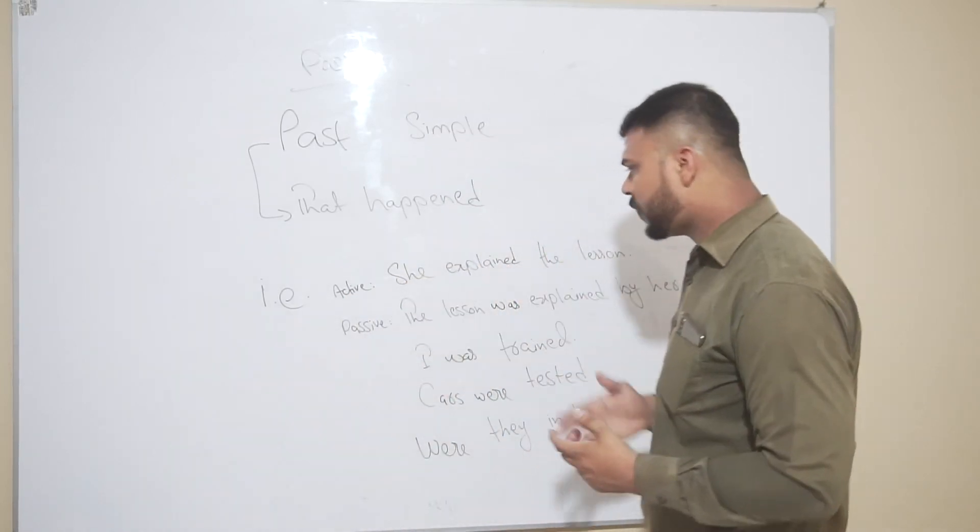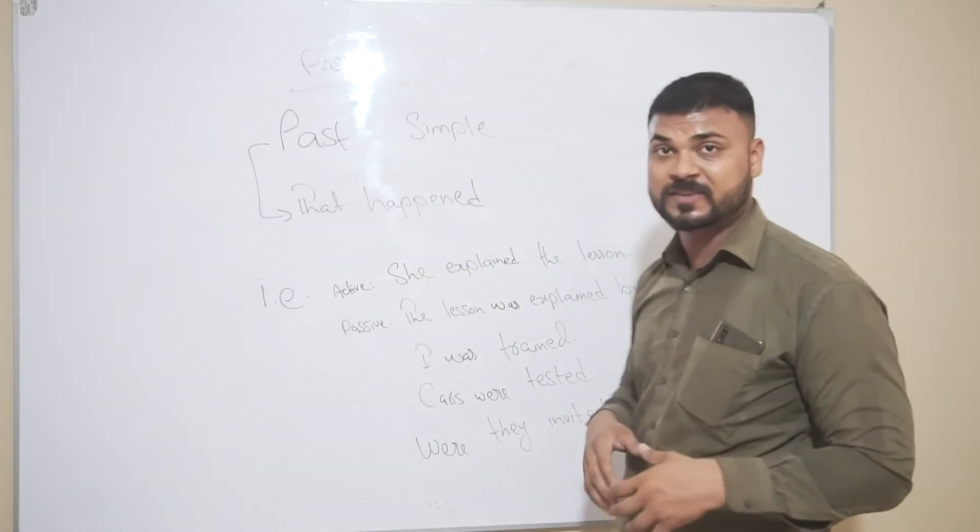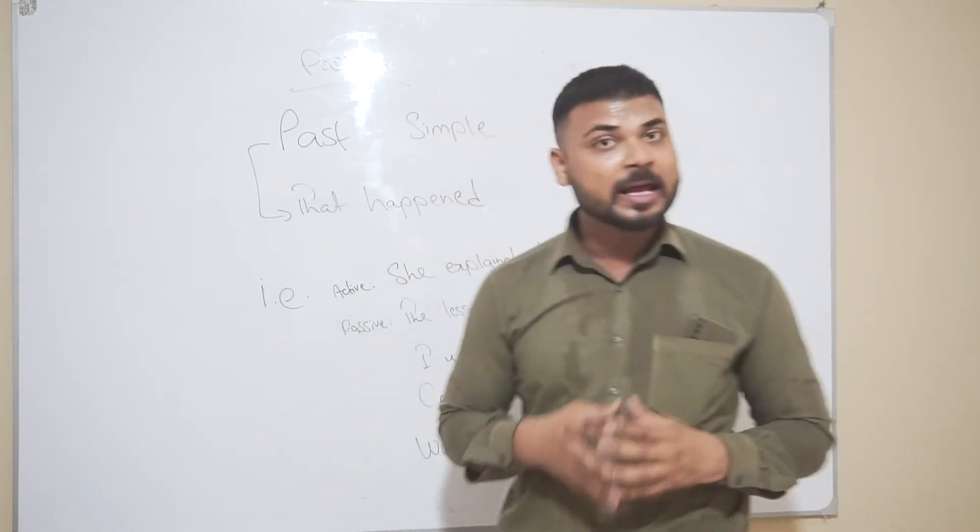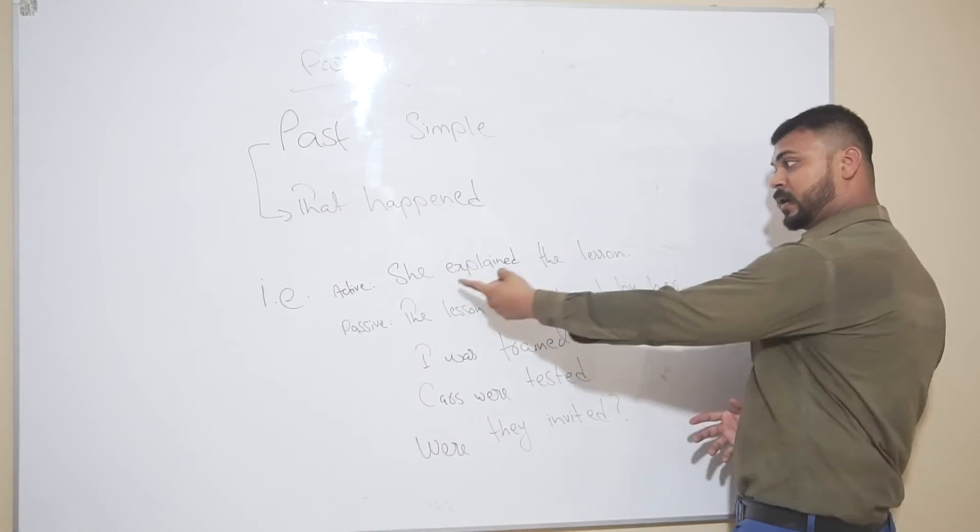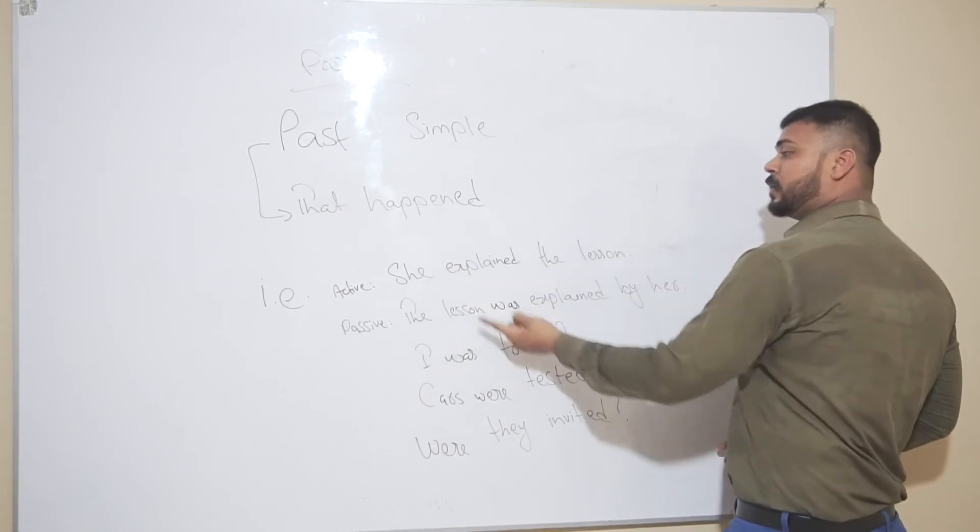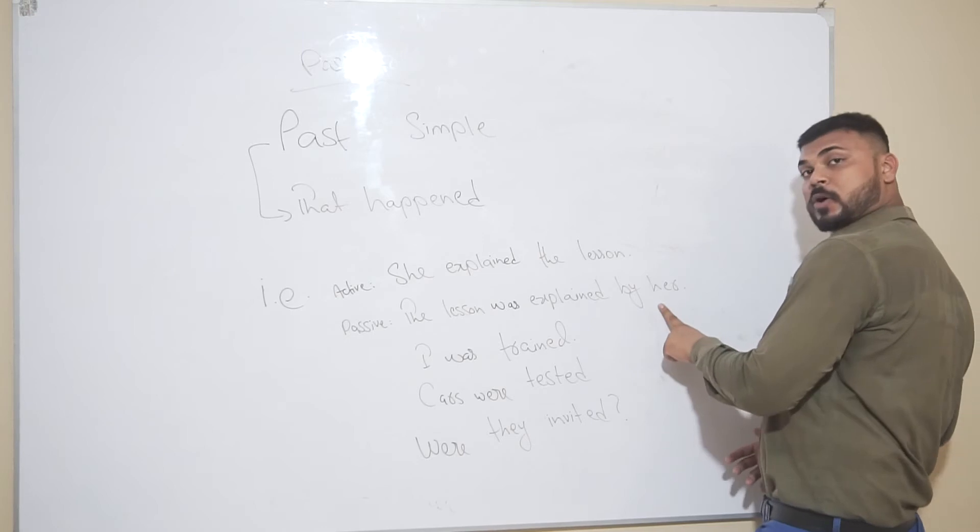Remember, third form of this verb. So the third form of explain is explained, and the second form is explained as well. So the lesson was explained by her. Subjective pronoun was converted into an objective pronoun.